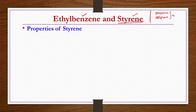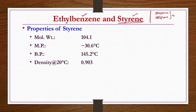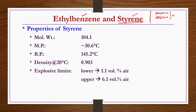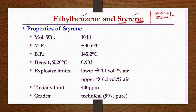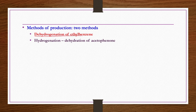The pertinent properties of styrene: molecular weight 104.1, melting point minus 30.6°C, boiling point 145.2°C, density at 20°C is 0.903 g/cc. Explosive limits are 1.1 and 6.1 volume percent in air. Toxicity limit is 400 ppm. Technical grade is 99% purity. Two methods of production exist: dehydrogenation of ethylbenzene, and hydrogenation/dehydration of acetophenone. We will discuss the first method in detail — producing ethylbenzene then dehydrogenating it to get styrene.